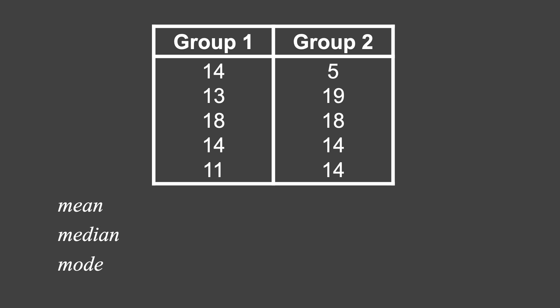Two groups of five students with their scores. Looking at the data of the first group, the mean is 14, median is 14, and mode is also 14. For the second group, the mean is also 14, the median is also 14, and mode is also 14. Considering their measures of central tendency, they are useless to determine which of these two groups is better since they have the same measures of central tendency.